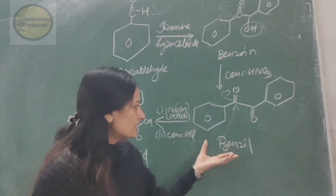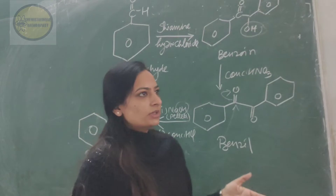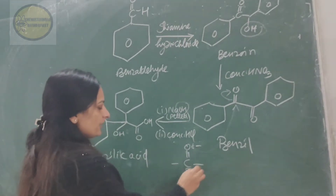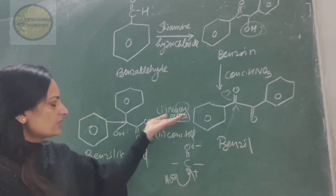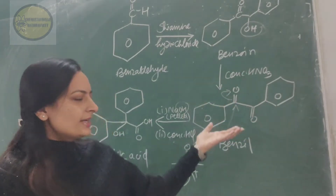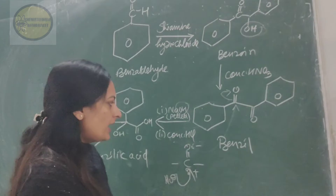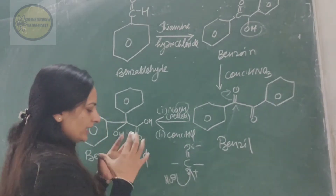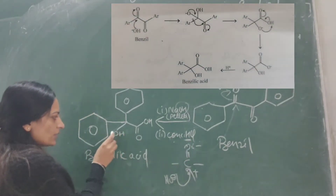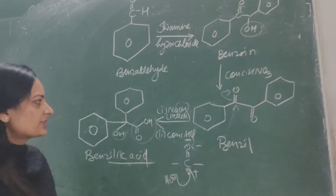When NaOH is added to benzil, NaOH is a base, and bases when reacting with carbonyl compounds always undergo nucleophilic addition. The carbonyl group has C double bond O, where the carbon is partial positive and the oxygen is partial negative. Any nucleophile attacks on this carbonyl carbon. The hydroxide ion (OH⁻) from NaOH attacks the carbonyl carbon and an anion is generated. That anion undergoes rearrangement, and in the presence of HCl, the H⁺ provided by HCl completes the structure of benzilic acid, giving us the carboxylic group C double bond O with OH. That is why the product is named benzilic acid.